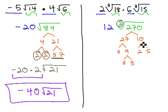Because we have an index of 3, we're looking for triplets to pull out, and we have a triplet of 3's. 12 is already in front, the 3 we're pulling out of the cube root, and then the 2 times 5, or 10, is left inside.